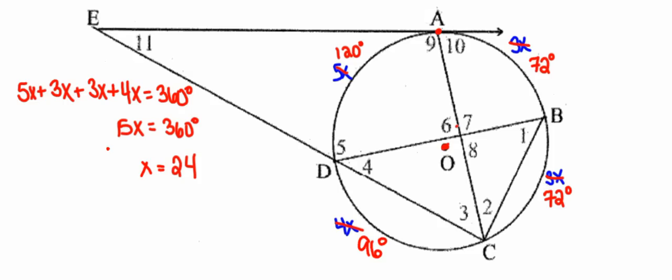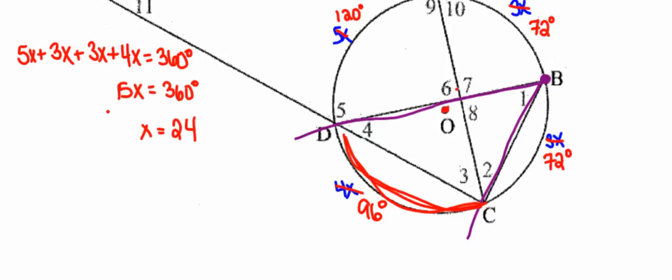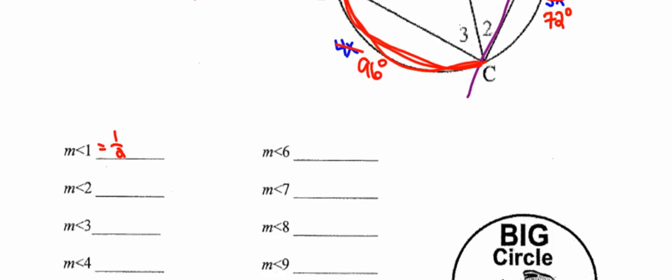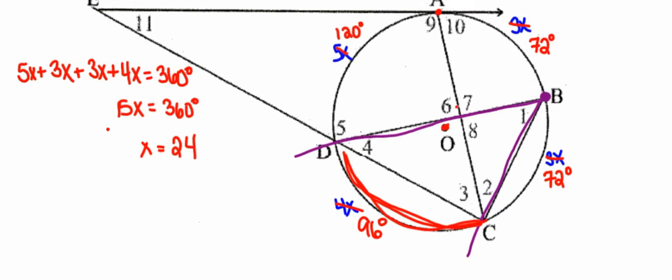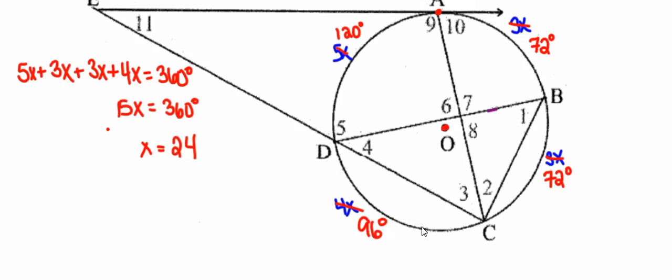Now I can find the degree measures of the angles. Angle 1 is an inscribed angle — its vertex is on the circle, so its degree measure is half that of its intercepted arc. Extending the sides of angle 1, I see its intercepted arc is 96 degrees. So the measure of angle 1 is half of 96, which is 48 degrees. I'll label that in the diagram.